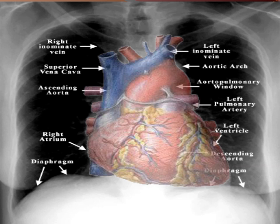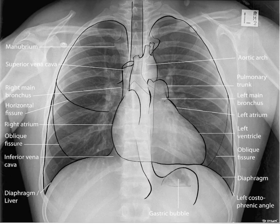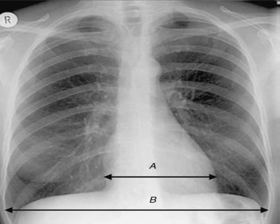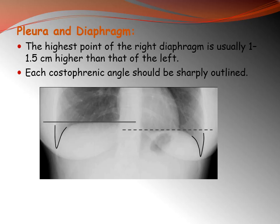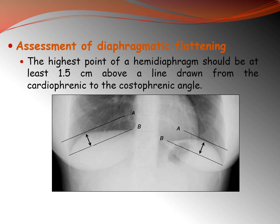Now, what is normal on a plain chest x-ray? The chest contains the lungs and mediastinum, which includes the heart and great vessels. We can assess the cardiac size, the pleura, and the diaphragm. The right hemidiaphragm should be clearly visualized and higher than the left, secondary to the effect of the heart on the left diaphragm and the liver on the right. The costophrenic angles should be sharply outlined. Diaphragmatic flattening: the diaphragm should be concave upwards, with a distance of 1.5 cm between the dome and an imaginary line connecting the costophrenic and cardiophrenic angles.